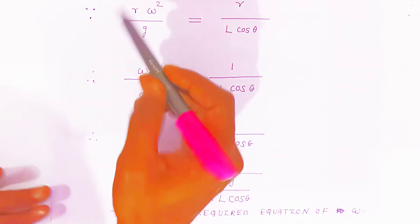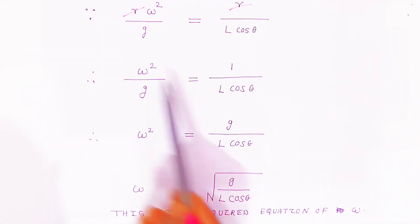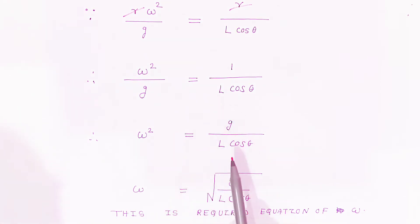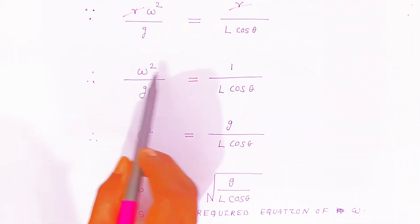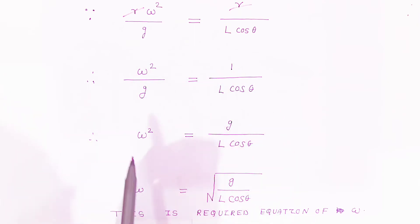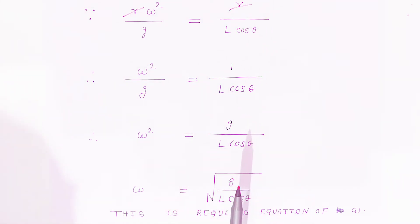After r cancels, we get ω² = g/(L cosθ). Taking the square root, the angular velocity is ω = √(g / L cosθ). This is a very important expression for the conical pendulum — this is the required equation of angular velocity.